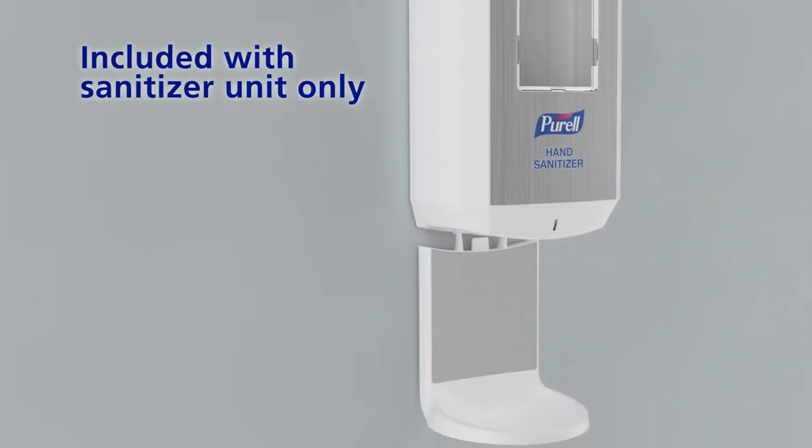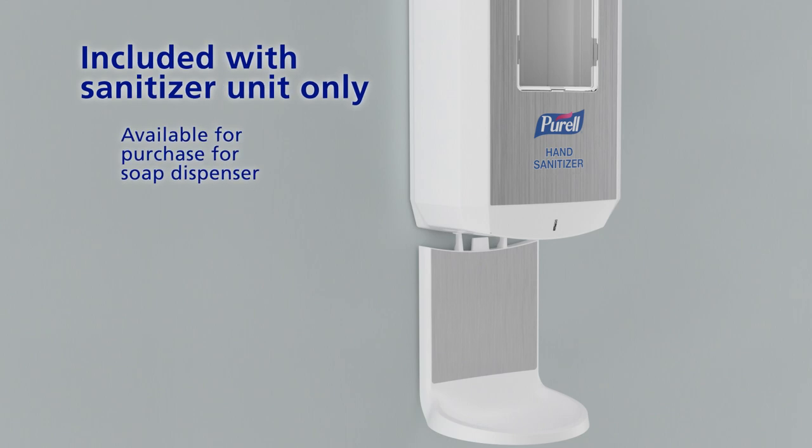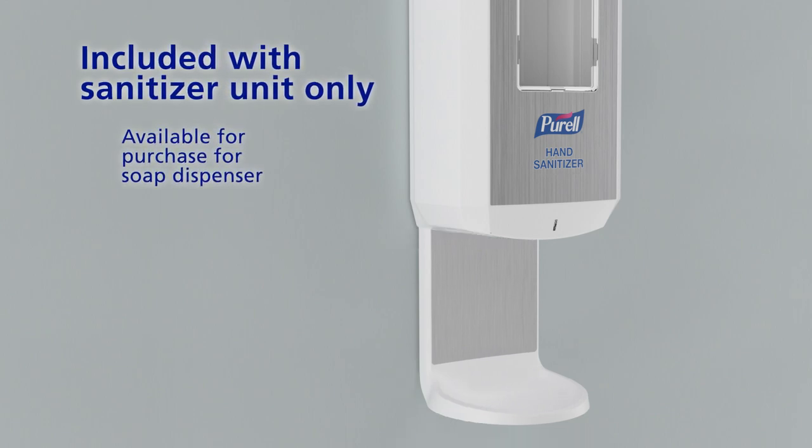For hand sanitizer, install the shield floor and wall protector by inserting the tabs into the dispenser slots.